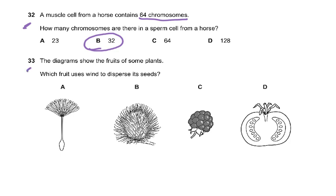Question 33: the diagram shows fruits of some plants. Which fruit uses wind to disperse its seeds? That has to be the dandelion — the answer is A. The other fruits would stick to animals, or be eaten by animals with seeds dispersed through digestion.